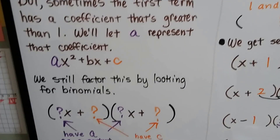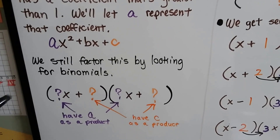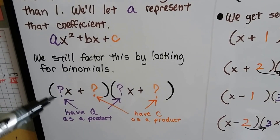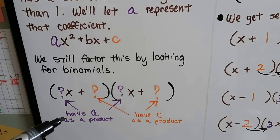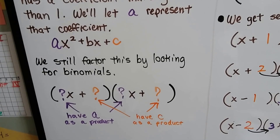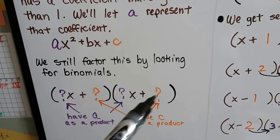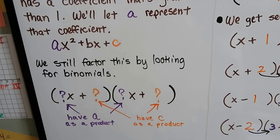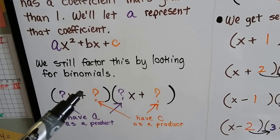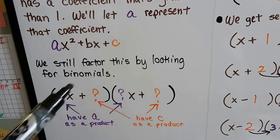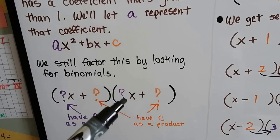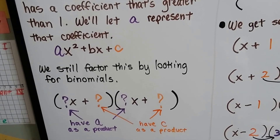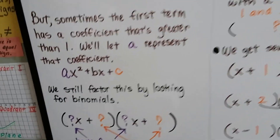We still factor this by looking for binomials. The first term in each binomial factor is going to have a as its product, the last term is going to have c as its product, and the inside and outside products added together give us b. So let's see how this works.